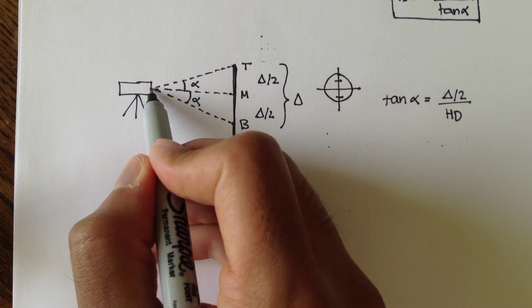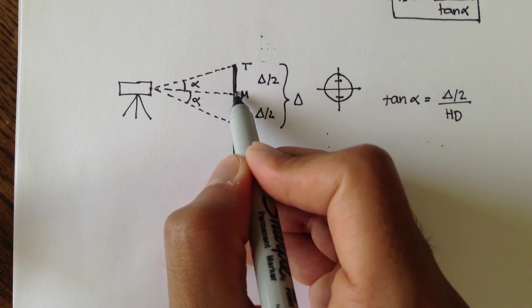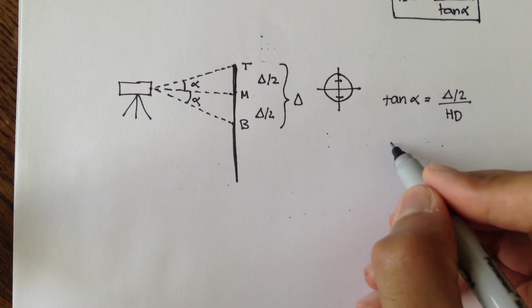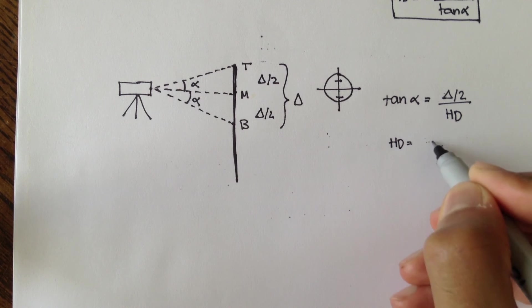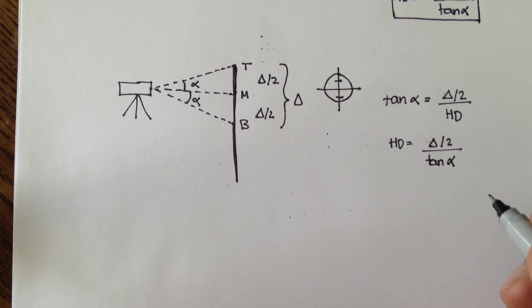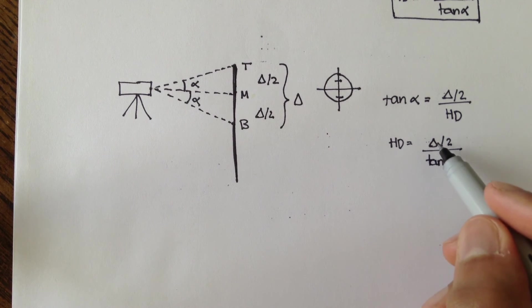Again, let's solve for HD. HD becomes delta divided by 2 over tan of alpha. And really, the only thing that changes in this equation, the only input that changes, is delta.